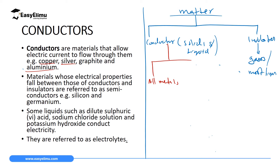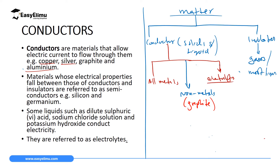We also have non-metals which can conduct electricity. An example is graphite. Graphite is carbon — an allotrope of carbon that we will discuss later in chemistry — and it is able to conduct electricity because during bonding, one electron is left free which can move and conduct electricity. Liquids which can conduct electricity are called electrolytes. These are solutions, including the molten state of most salts. When salts are in molten state they can move and conduct electricity. Examples of electrolytes include sodium chloride solution and potassium hydroxide solution, among many others.